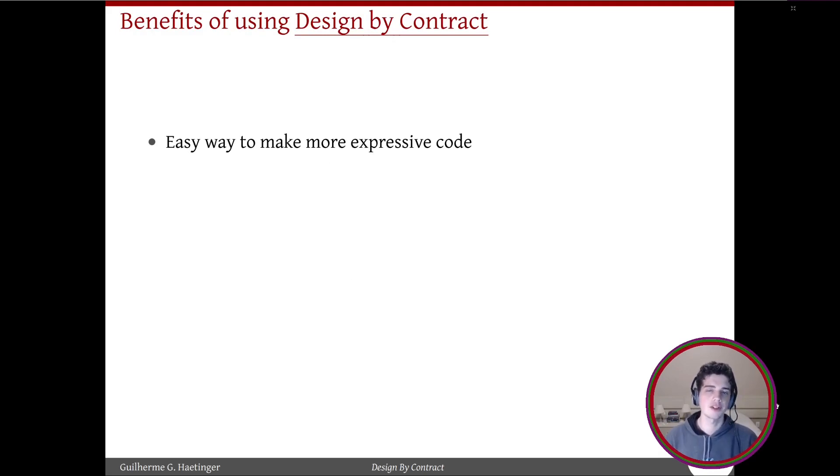So what are the benefits of using Design by Contract? The first one is that it makes your code much more expressive. By adding strict boundaries to functions, loops and structures, Design by Contract makes sure that each artifact is well represented and has a well defined responsibility.